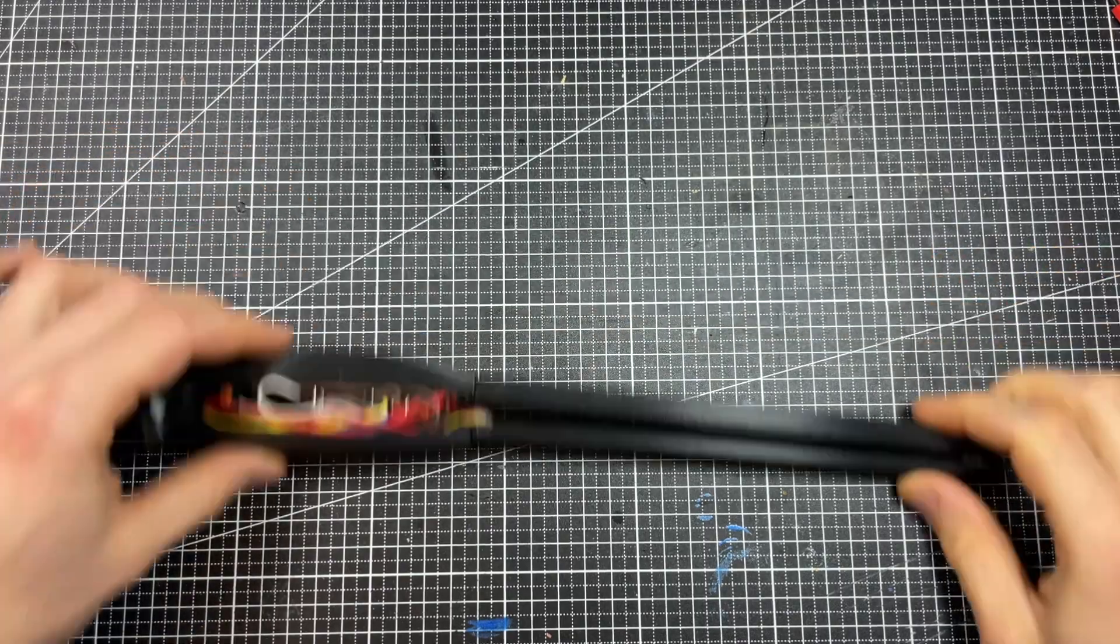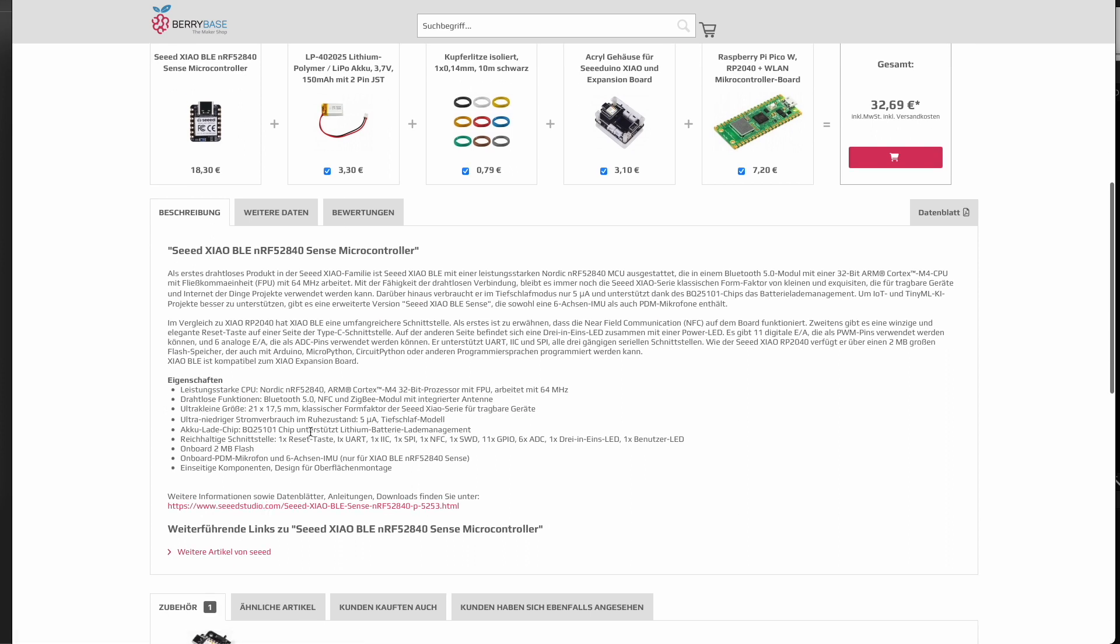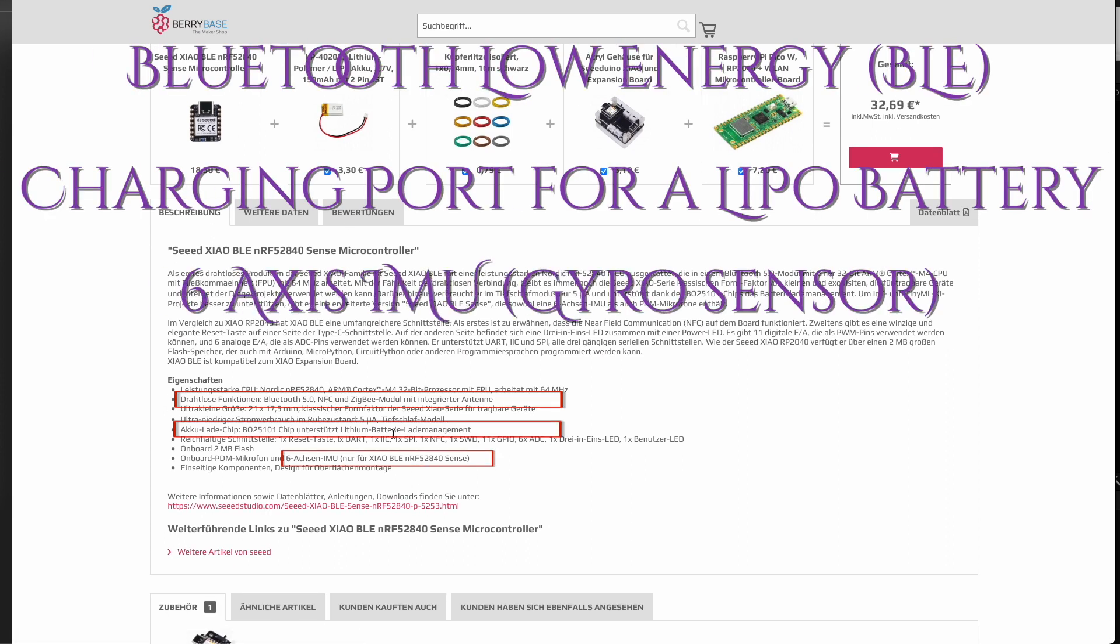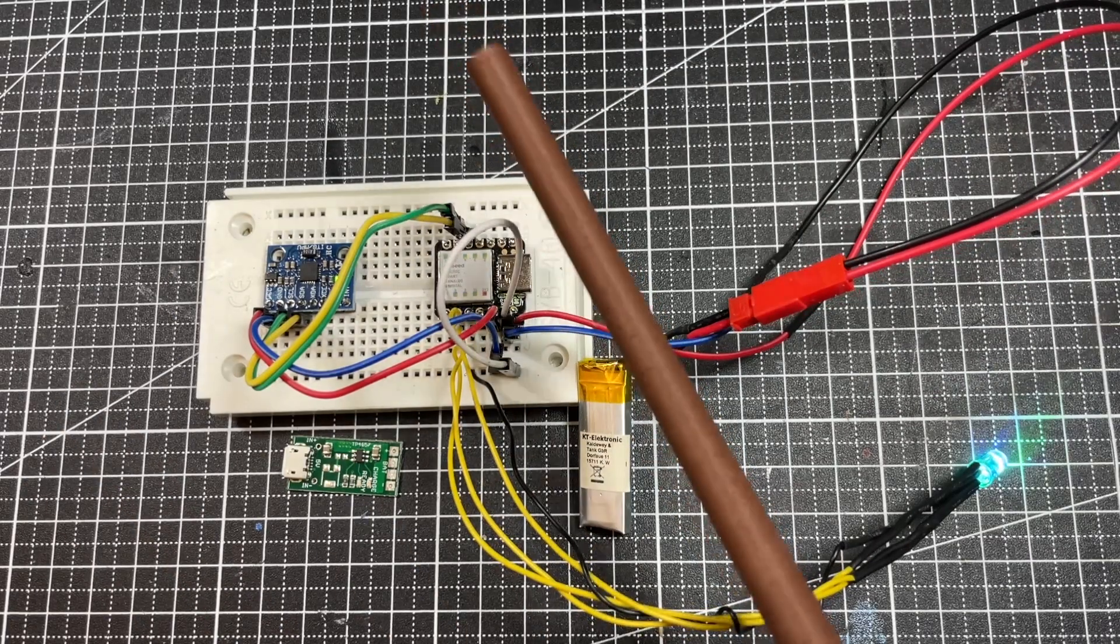But then I came across this company, BerryBase. They sold this tiny microcontroller. It has so many built-in things: Bluetooth, charging port for LiPo battery, and gyro sensor. So I was able to replace all these parts.